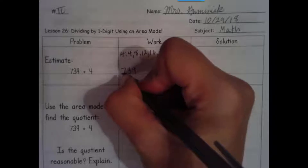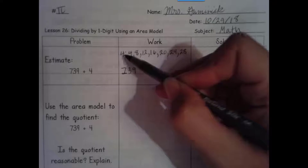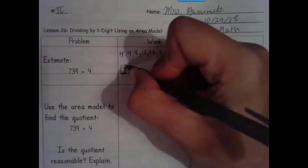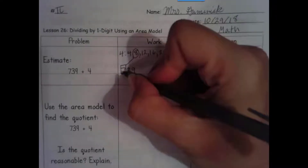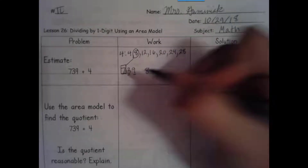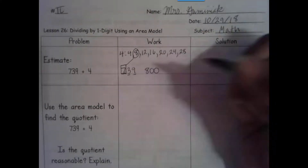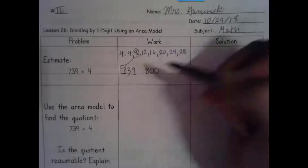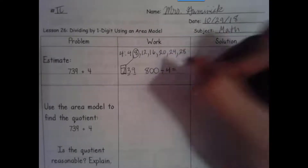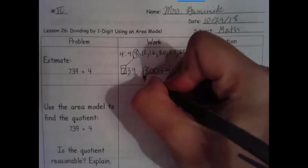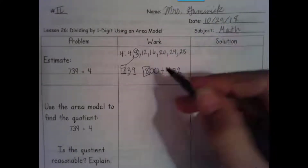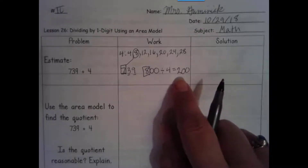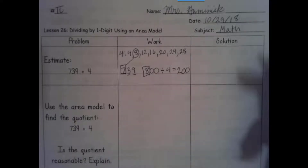For 739, I look at the digit in the largest place — that is 7. Is 7 greater than 4? Yes. So that means I just have to look at the 7. Which number in our list is closest to 7? That would be 8. So I'm going to replace the 7 with an 8, and then I have two places after, so I need two placeholders. The compatible number is 800, and I'm going to divide that into groups of 4. That's 8 divided by 4, which is 2, with two placeholders — so 800 divided by 4 is 200 groups. My estimate is 200.